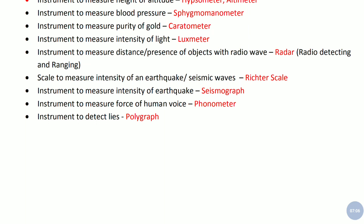Now there is a scale which is used to measure intensity of any earthquake or basically seismic waves - it is Richter scale. And the instrument used to measure intensity of earthquake - it is called seismograph. So Richter scale is a scale, whereas the instrument used to measure is seismograph.